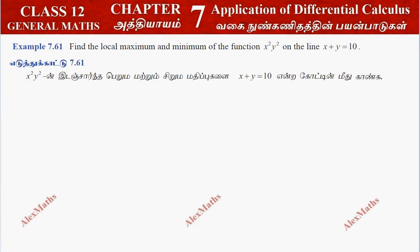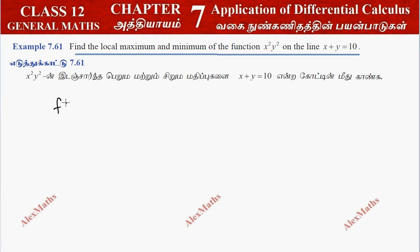Hi students, this is Alex here. Example 7.61: Find the local maximum and minimum of the function. In the function we have two variables, so f of x is in terms of x and y.